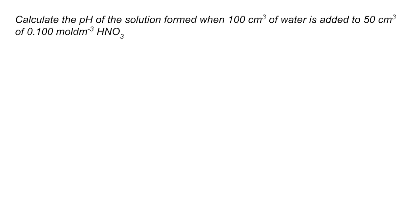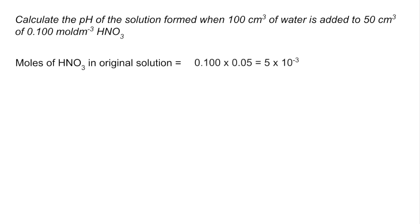I've got a couple of calculations that are deliberately not as straightforward as some. The first one: calculate the pH of the solution formed when 100 cm³ of water is added to 50 cm³ of that concentration nitric acid. The first step is to work out the moles of nitric acid — concentration times volume — giving 5 × 10⁻³ moles.